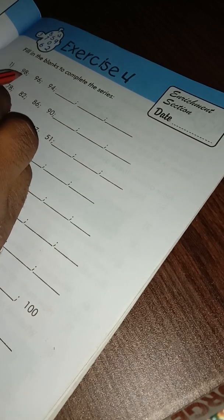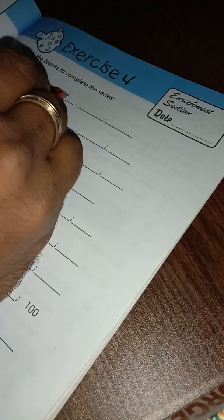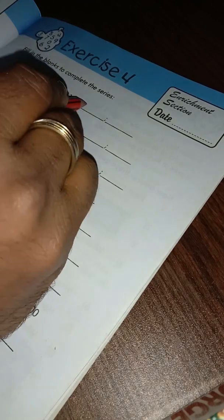We think this is decreasing by 2. So 94 minus 2 is 92, 92 minus 2 is 90, 90 minus 2 is 88.